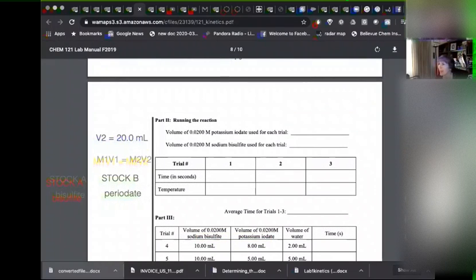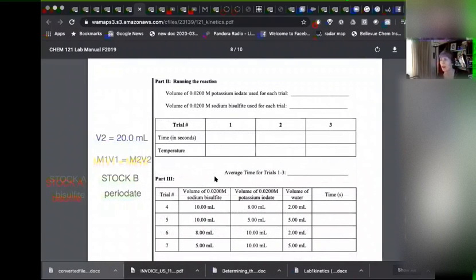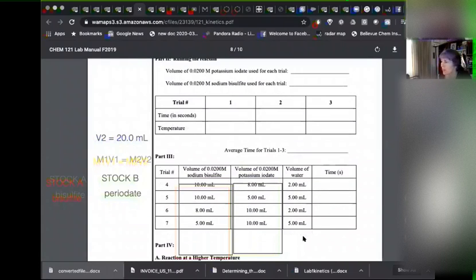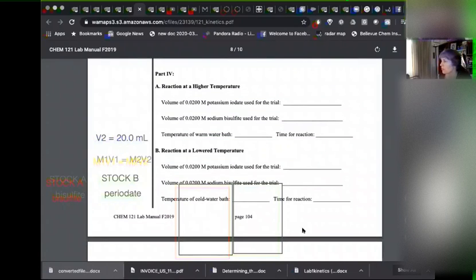Okay. So this is our reaction table for the trials. Here we have our volumes and the molarities of stock A, solution A. And then here we have the volume and the molarity of stock B. So you see, we add water to make sure the total volume is 20 every single time. Okay. And then we have our warm bath and our cool baths.